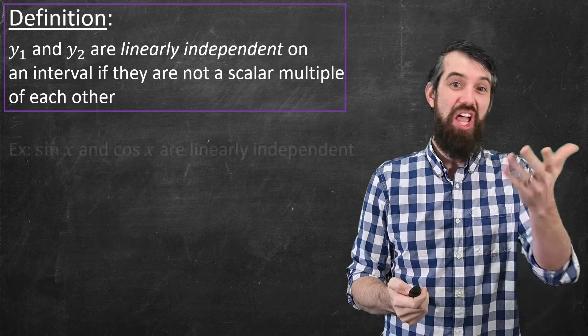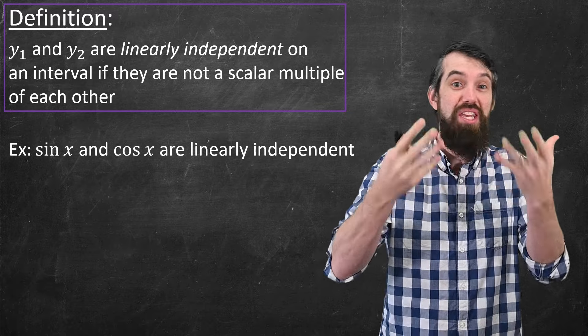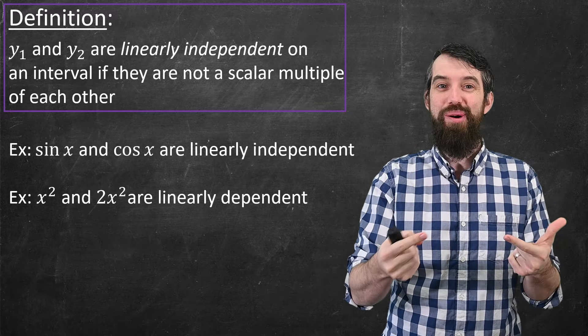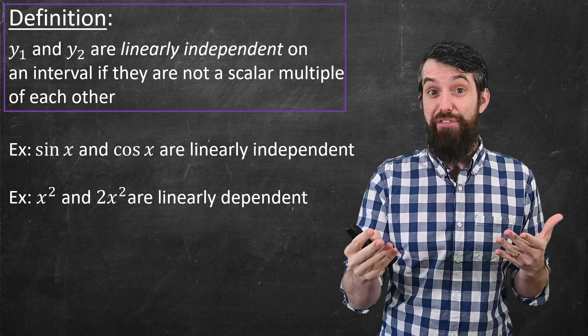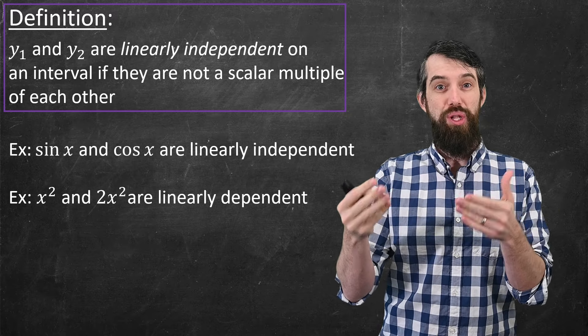For example, sine and cosine are linearly independent because sine is not just a number times cosine. But x² and 2x² are linearly dependent because one is just twice the other. We've seen this definition earlier when talking about second-order differential equations.